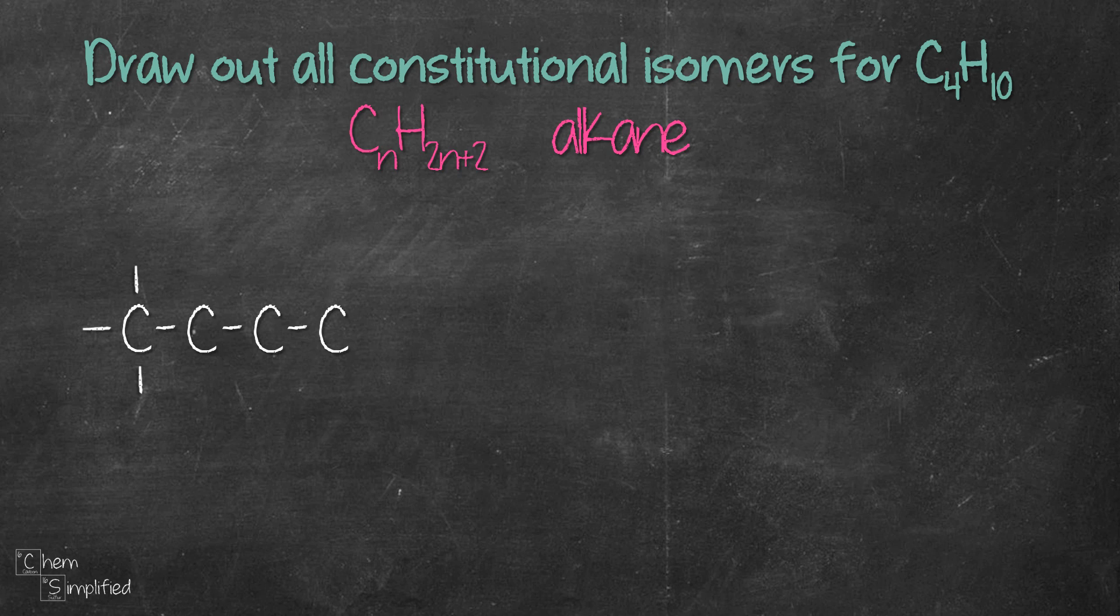The second carbon is already connected to two carbons on the left and right, so that means it has a remaining of 4 minus 2 equals two bonds. The third carbon is the same as the second carbon, so it will also have two bonds.